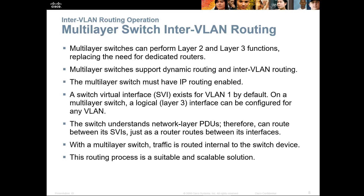Multi-layer switches support dynamic routing and inter-VLAN routing internally on the switch because they are Layer 3 devices. They must have an IP address and a switched virtual interface, also known as an SVI. The switch understands a network layer PDU — a Layer 3 packet — and routes between switched virtual interfaces just as a router would. With a multi-layer switch, traffic is routed internally on the switch. This routing process is a scalable solution, no longer tying you directly to an external router.